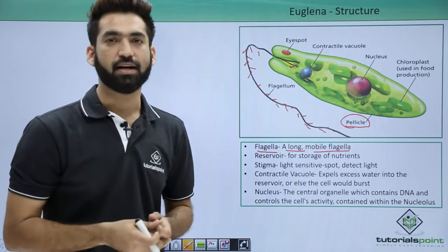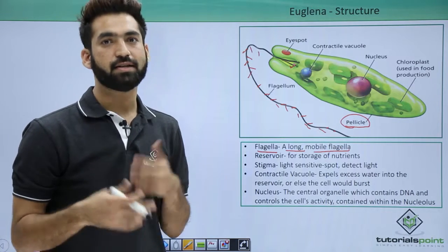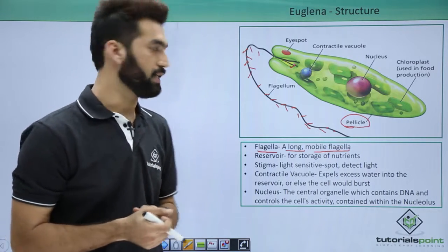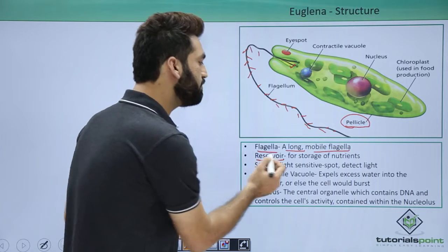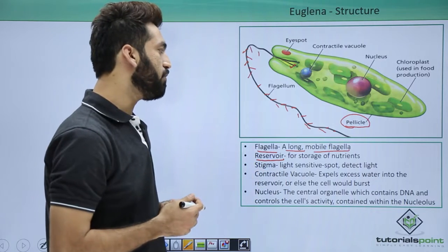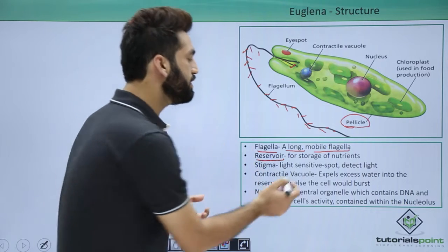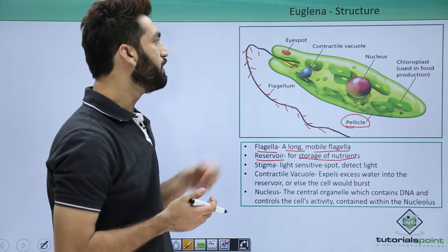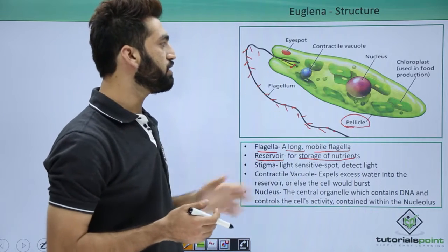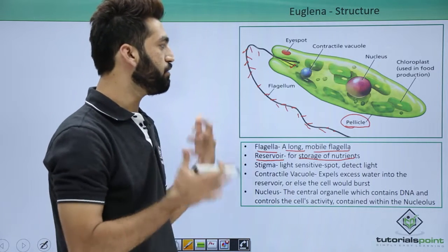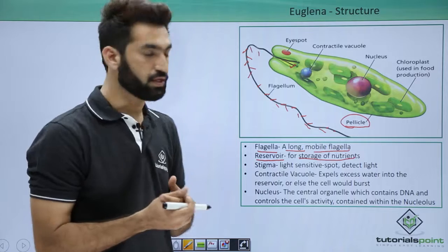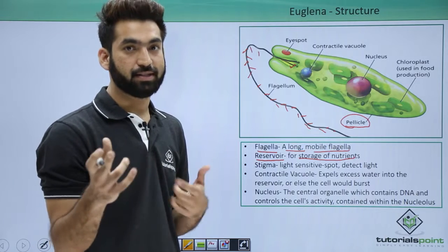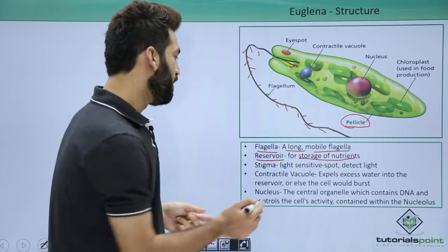Both of the flagella are different. The other small flagella doesn't play any role in motility. They also have a reservoir, which is for storage of nutrients. If you can look, they have this reservoir where they can store up food, and the storage of food is in the form of paramylon bodies.